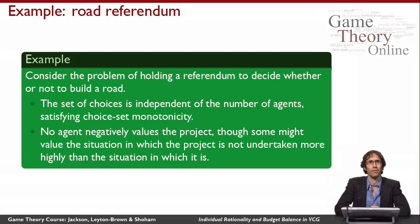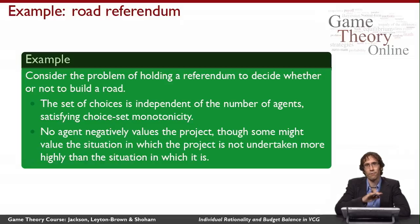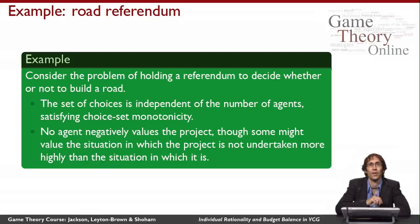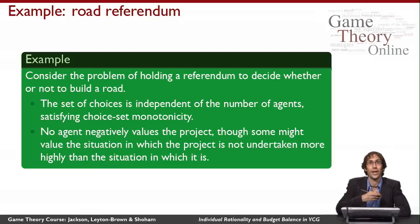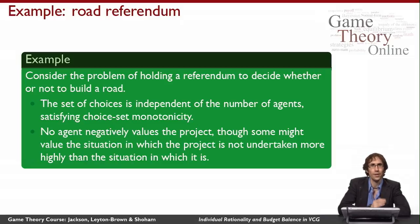Let's look at two examples of realistic scenarios that satisfy both of these properties. The first is the road building referendum problem — a vote between agents to decide whether or not to build a public good like a road. The set of choices doesn't change with the number of agents: either the road gets built or it doesn't. So the choice set is monotonic in the weak sense that it just doesn't change. And if we assume no agent negatively values the project, that gives us no negative externalities.